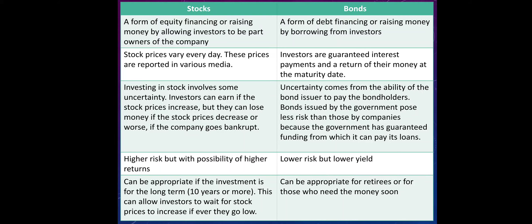For bonds, the uncertainty only comes from the ability of the bond issuer to pay the bondholders. Bonds issued by the government pose lesser risk than those by companies because government has guaranteed funding. For stocks, there is higher risk but with the possibility of higher returns, because there are times that stock prices increase over time. For bonds, however, this is low risk but low yield — there is very little risk that you will lose your money, but there is only lower interest or lower income as compared to stocks.